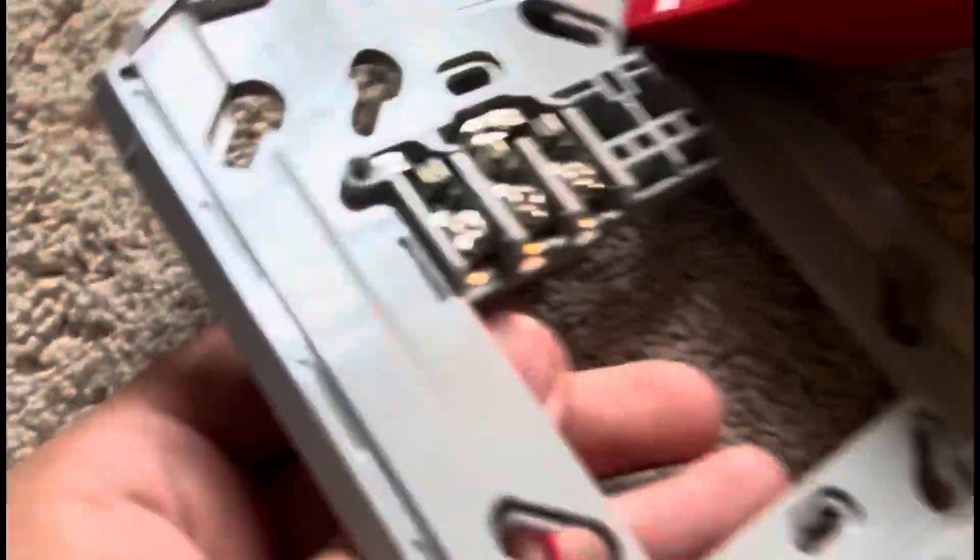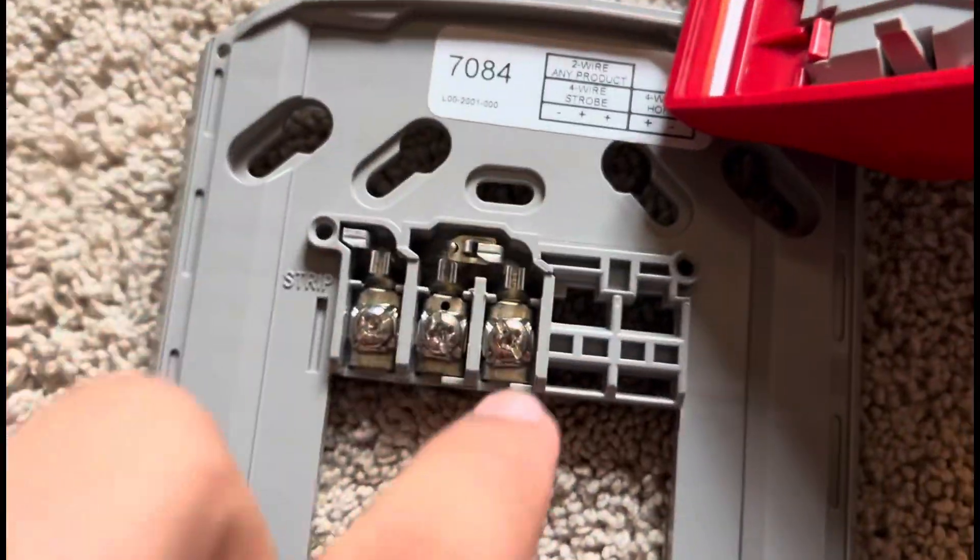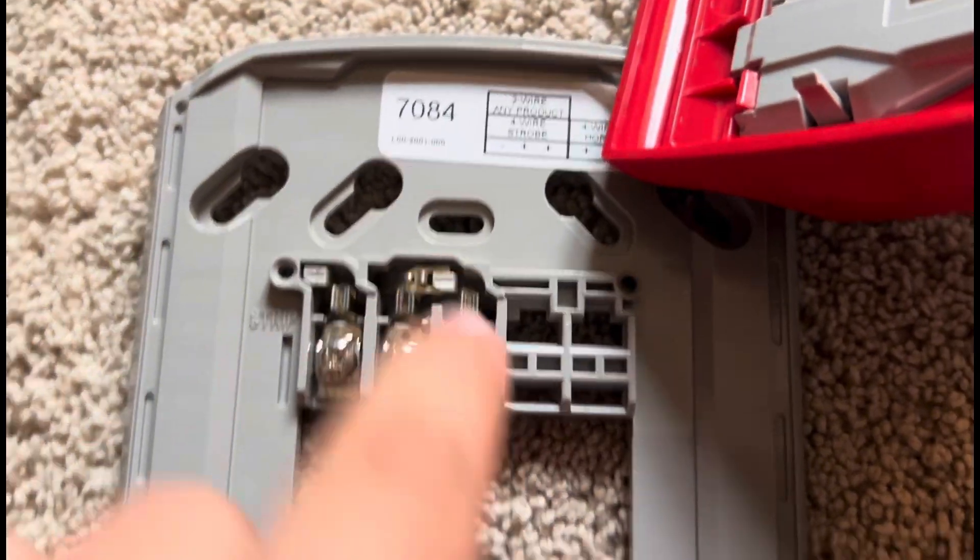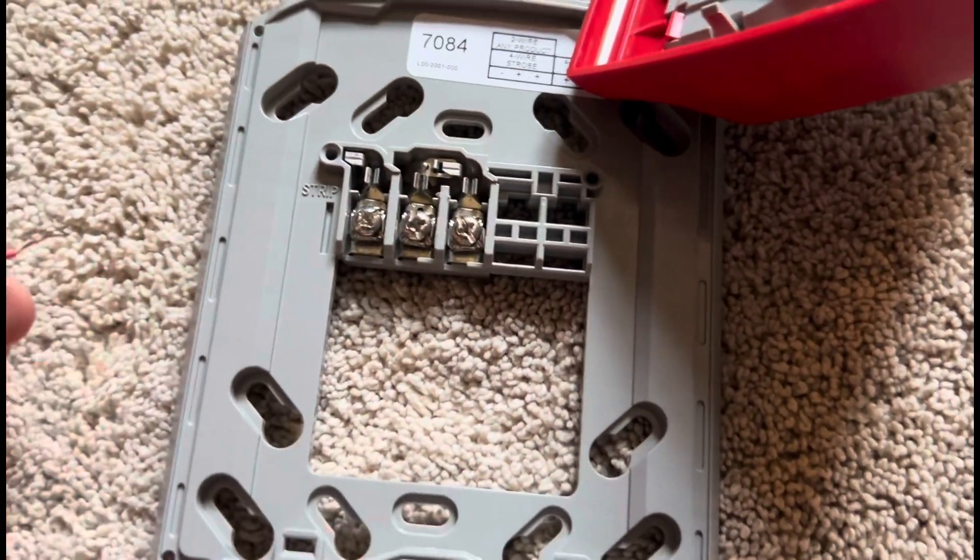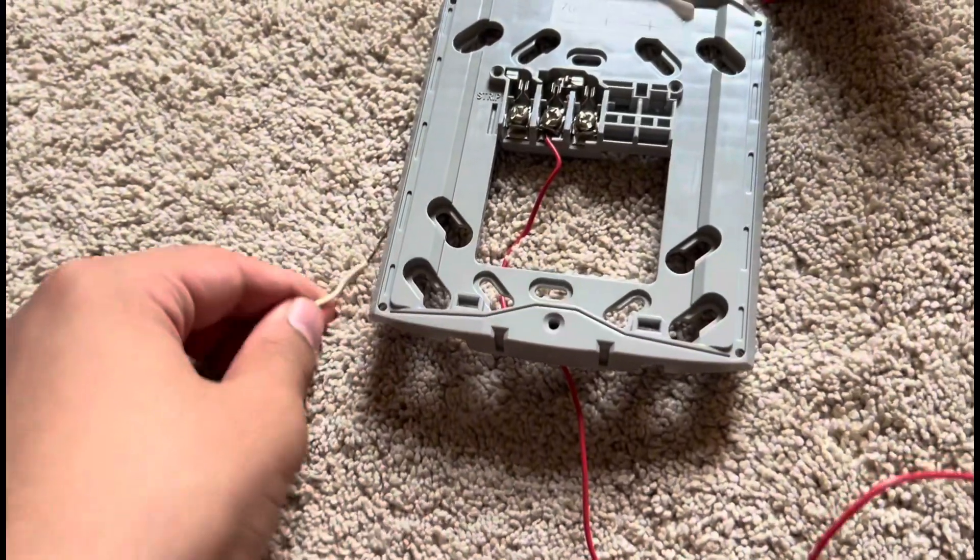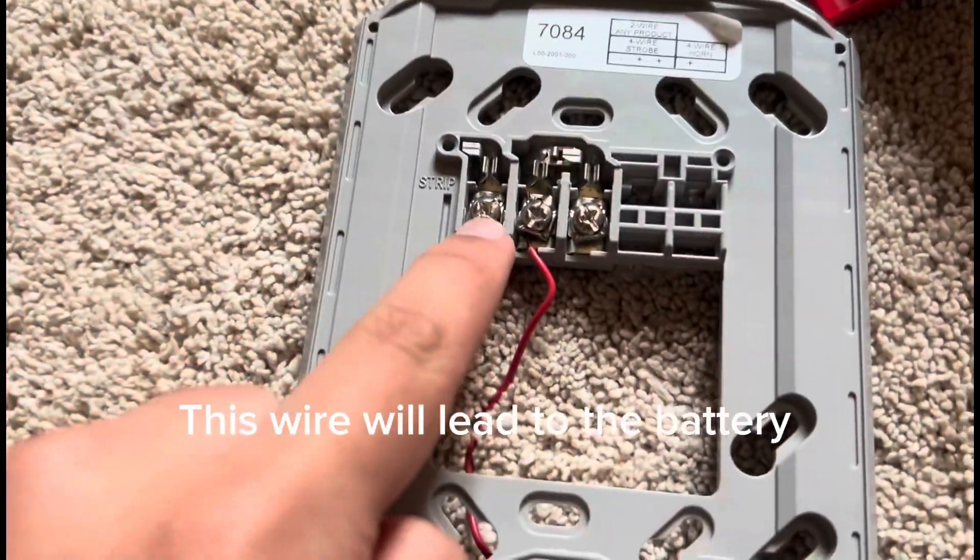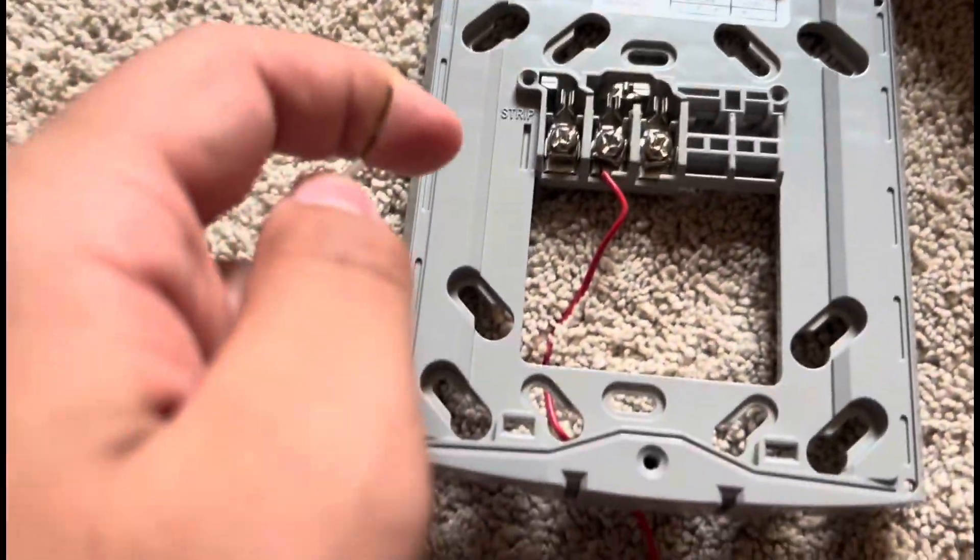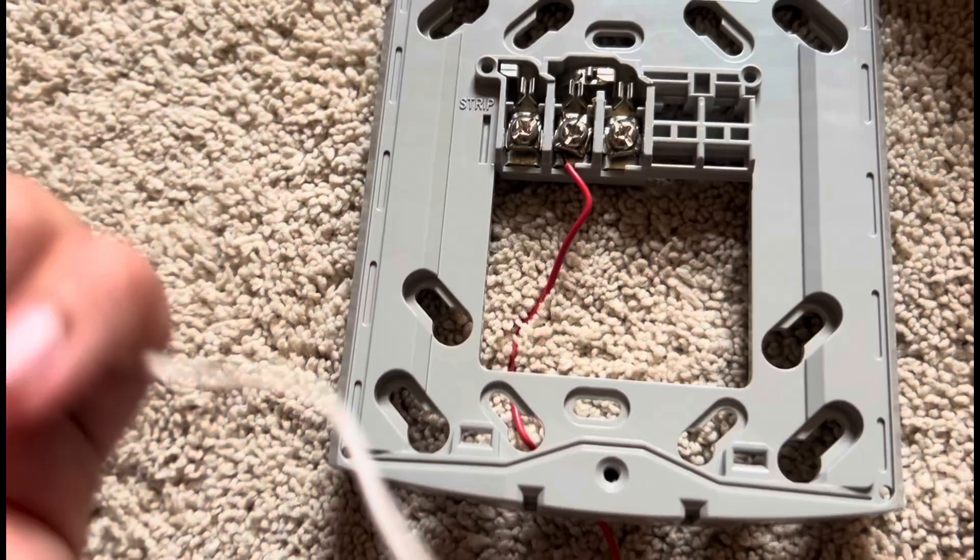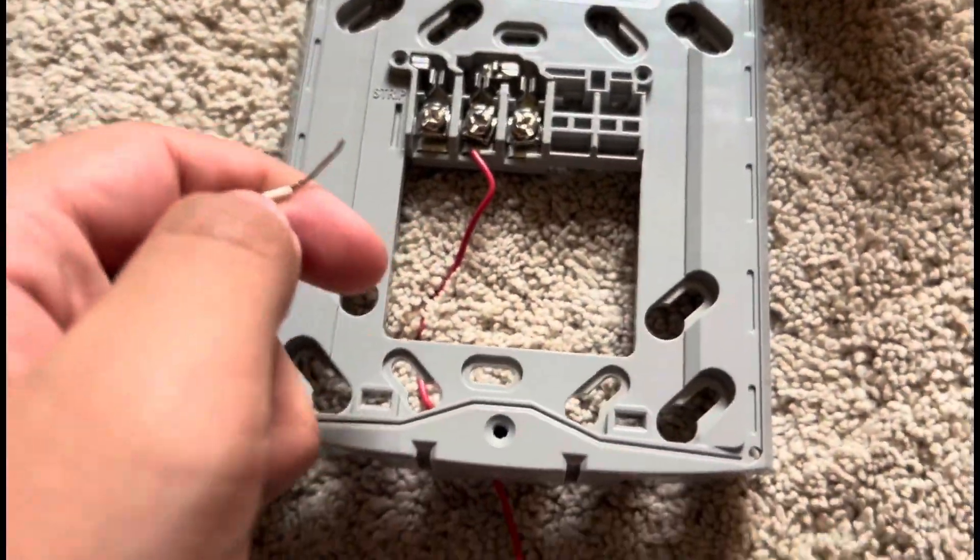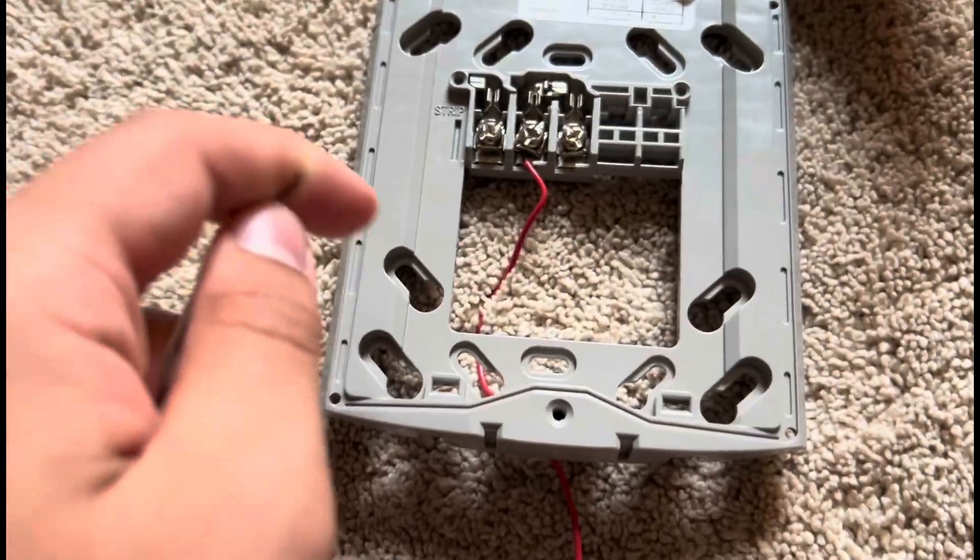Then you're going to take your wire and put it into the positive. So that would be this one or this one. Take your third wire and put it in the negative. You're going to take your third wire and put it in the negative of your bracket or your device.